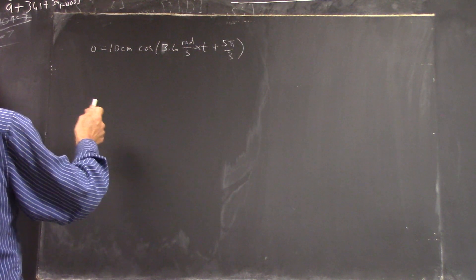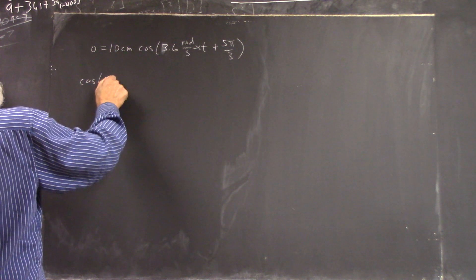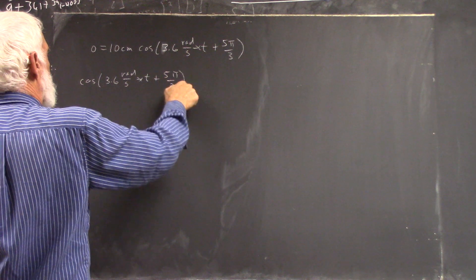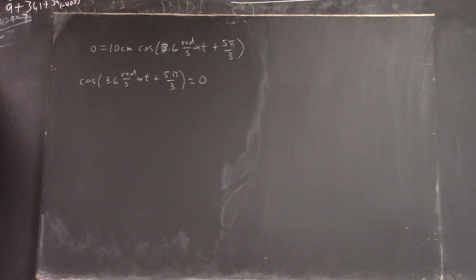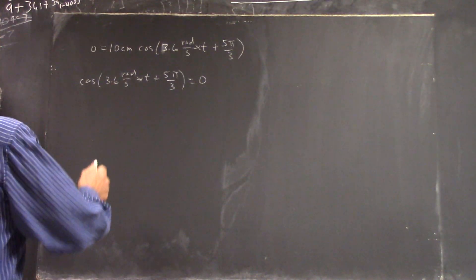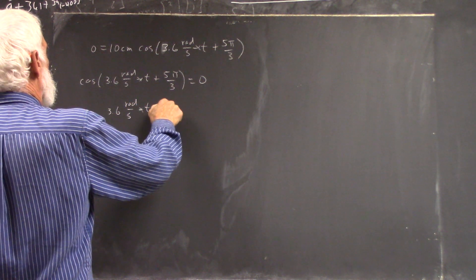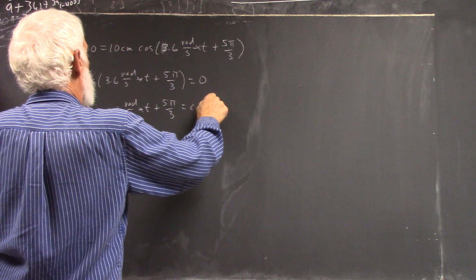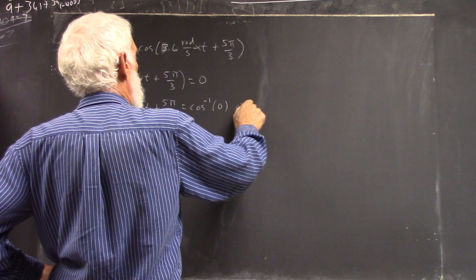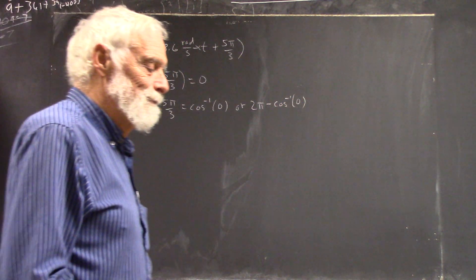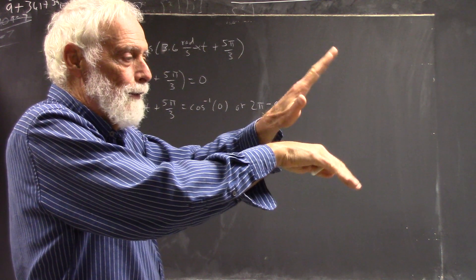Okay, well, that's really pretty easy to solve. That means that the cosine of 3.6 radians per second times t plus 5 pi over 3 has to equal zero, right? So, when does the cosine equal zero? You can say that 3.6 radians per second times t plus 5 pi over 3 would then have to be the inverse cosine of zero or 2 pi minus the inverse cosine of zero. For the same reason, you've got that symmetry.